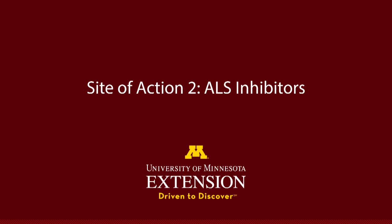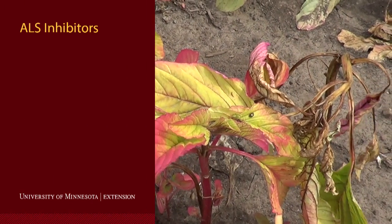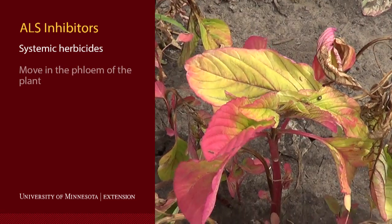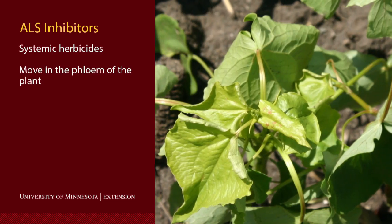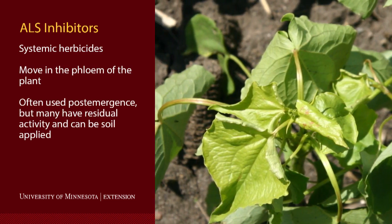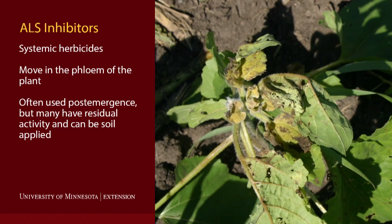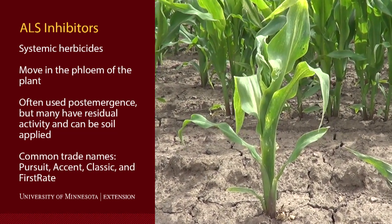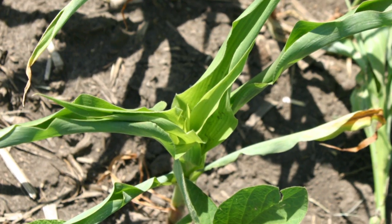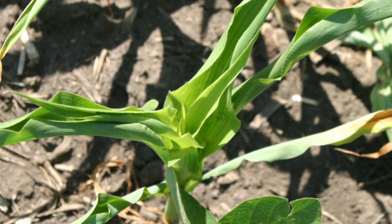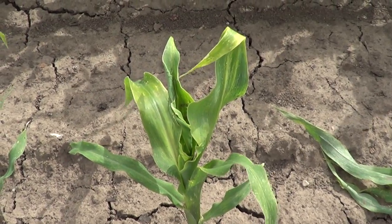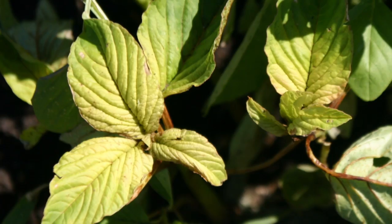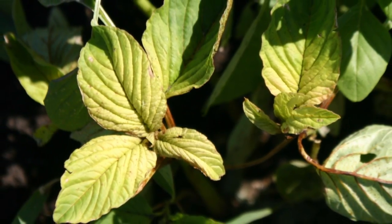Site of action two herbicides contain five chemical families that act on amino acid synthesis. These herbicides inhibit the ALS — acetyl lactate synthase — enzyme, resulting in injury symptoms to plant growing points. Shortening of internodes, chlorosis, or purpling of affected leaves of grasses is very common. Broadleaf plants exhibit yellowing of leaves and purple leaf venation.